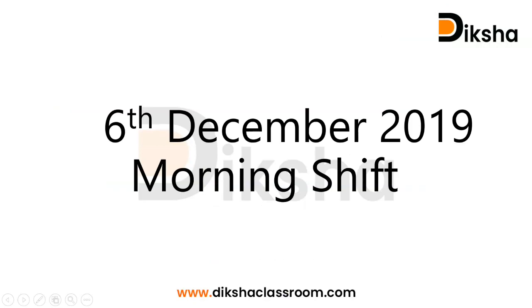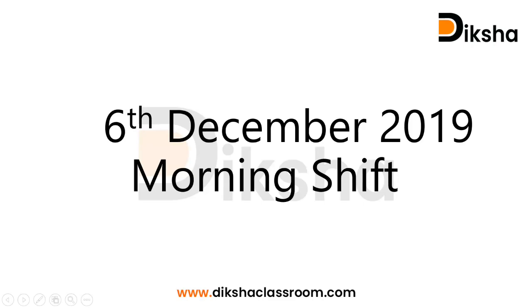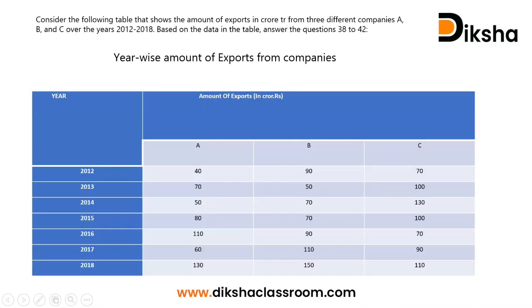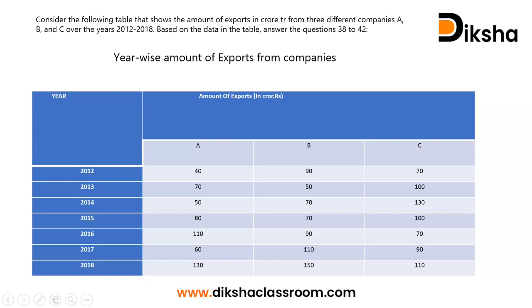Let's go directly to the questions. We are discussing the question paper from 6 December 2019, morning shift — questions from the topic of data interpretation. This is a table showing the amount of exports in crore from three different companies A, B, and C over three years from 2012 to 2018. Based on this table, you want to answer five questions.